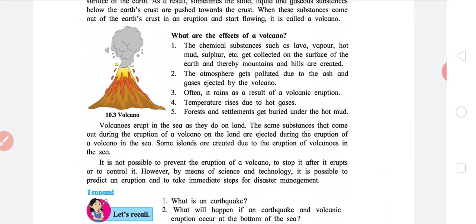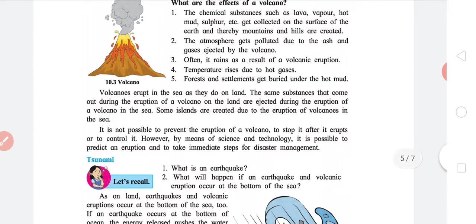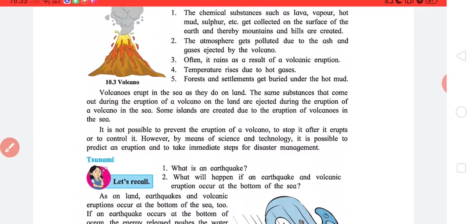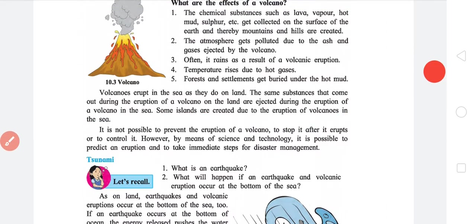That was more of a tsunami induced earthquake, maybe a wrong example to give, but if you see about volcanic eruptions, they are really bad and often you can easily find some videos on YouTube. Volcanoes erupt in sea as they do on land. Pacific Ocean has actually a string of volcanoes. The same substances that come out during the eruption of a volcano on the land are ejected due to the eruption of volcano in sea. Some islands are created due to eruption of volcanoes in the sea. Some of the Pacific islands are created by volcanoes.